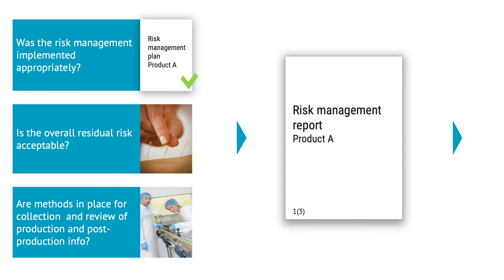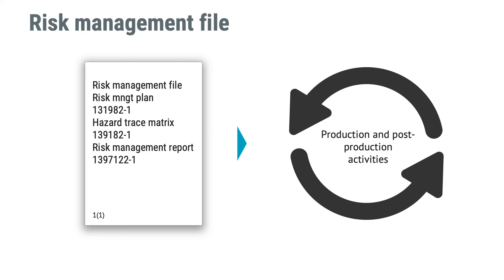The results of your risk management review should go into the risk management report. At the end of your development project you should also establish a risk management file, which is a set of records and documents that are outputs from your risk management process. A practical way to define what is part of the risk management file is to create an index pointing to all relevant documents and records. Thereafter you should continue with production and post-production activities — sometimes you will learn frightening things like risks you did not identify, and sometimes good things, like that certain risks don't occur as often as you thought. Production and post-production activities are about closing the loop to make risk management a continuous life cycle process, keeping the risk management file accurate and up-to-date.